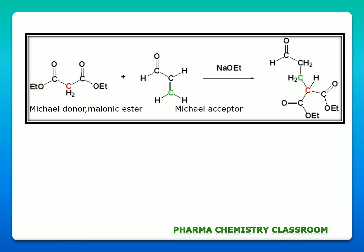Here is an example. We can see our Michael donor which is malonic ester taken here. This is our active methylene group which reacts with the Michael acceptor — an alpha-beta unsaturated carbonyl compound — in presence of a base to get an addition product. So Michael donor and Michael acceptor react together in presence of a base to get an addition product.